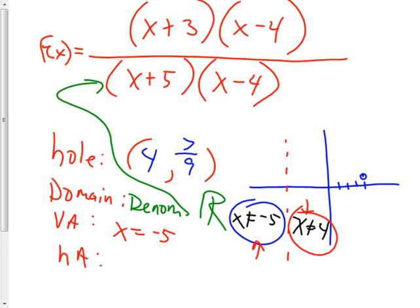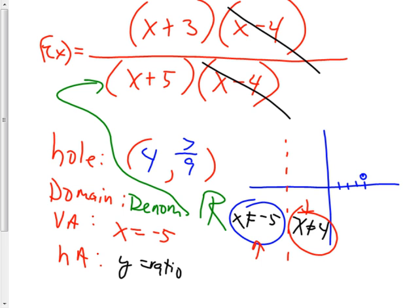Next thing: the horizontal asymptotes — those are asymptotes that look like this. I need to figure out where it's going to be. Is this bigger on bottom, bigger on top, or same on both? Same on both. And if it's same on both, it's SOBs — they're a ratio. So y equals a ratio of the lead coefficients. The lead coefficient on top is 1, on the bottom is 1. So it's a ratio of 1 to 1, which means y equals 1.